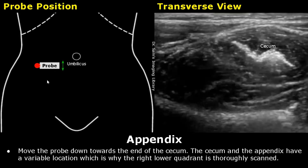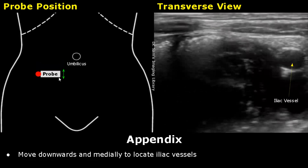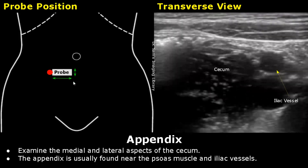Move the probe down towards the end of the cecum. This is done to make sure we thoroughly examine the right lower quadrant and it helps us in locating the appendix if it is not found up till this point. Both the cecum and the appendix have variable location. Move downwards and medially to locate the iliac vessels. Examine the medial and lateral aspects of the cecum. Usually the appendix is found near the psoas muscle and the iliac vessels.